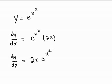And we look at another example. Suppose that y is equal to e to the x squared. Then dy/dx is going to be e to the same power times the derivative of the power. So it's e to the x squared times 2x. And the derivative then is just 2x e to the x squared.